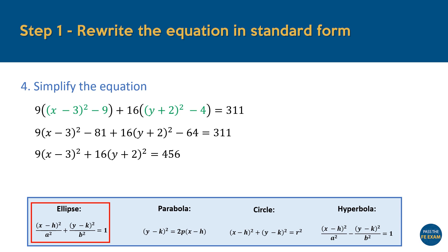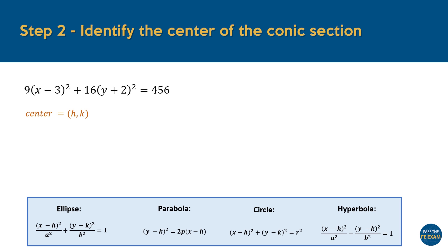since the problem only asks us to find the center of the curve, this additional step is unnecessary, since these values are already present within our brackets. From the standard form of the equation, we know that the center corresponds to the H and K values. And in this case, H is equal to 3 and K is equal to negative 2.